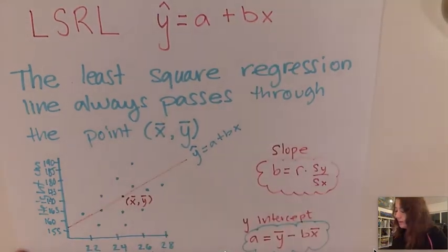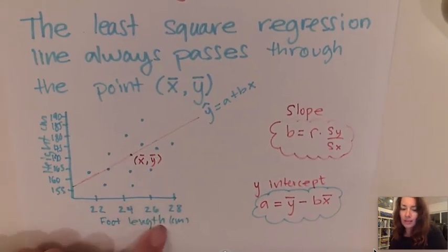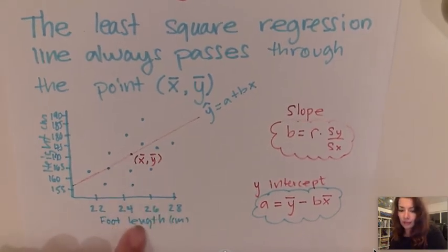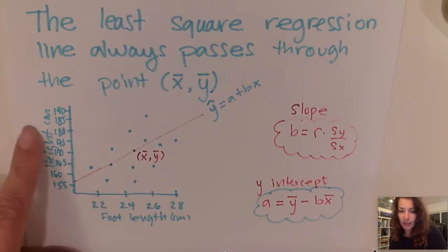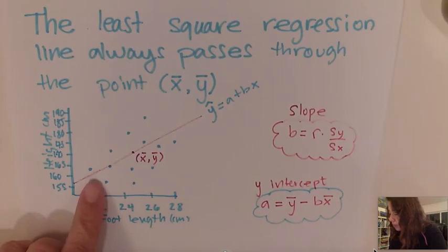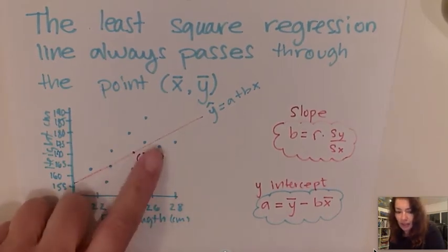Here I have an example of a least squares regression line passing through data where x is the foot length and y is the height measured in centimeters. One important thing to mention about the regression line is that wherever this line is,